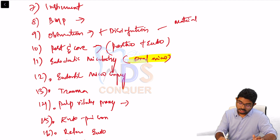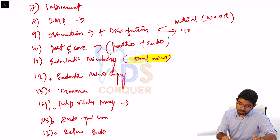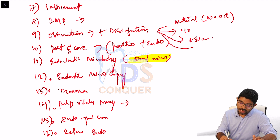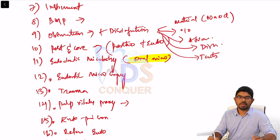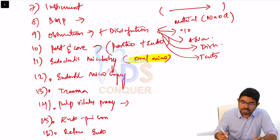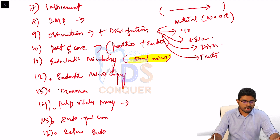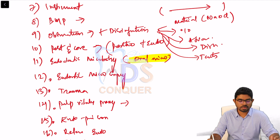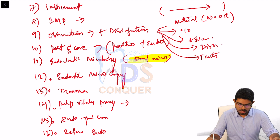Along with obturation, cover disinfection. There were questions on NaOCl in recent NEET — what materials are used, what percentage, advantages, disadvantages, associated tests, and the sequence of irrigation solutions. These are among the most frequently asked questions from an Endo perspective.